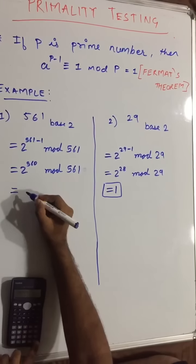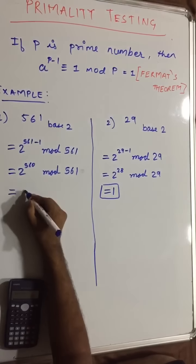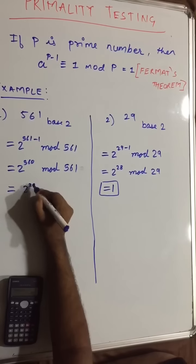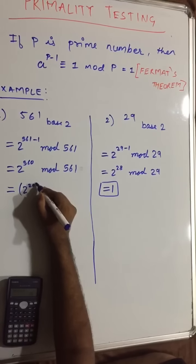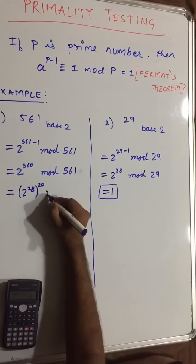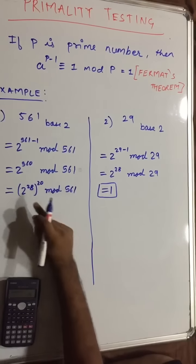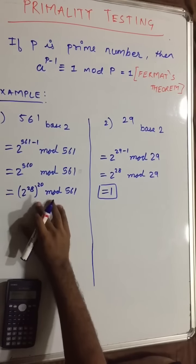So 560 we would be dividing it with 28. So we would be getting 20, so we can write it as 2 raised to 28 whole raised to 20 mod 561 using this factorization method. If you solve it further, you will again here get answer as 1.